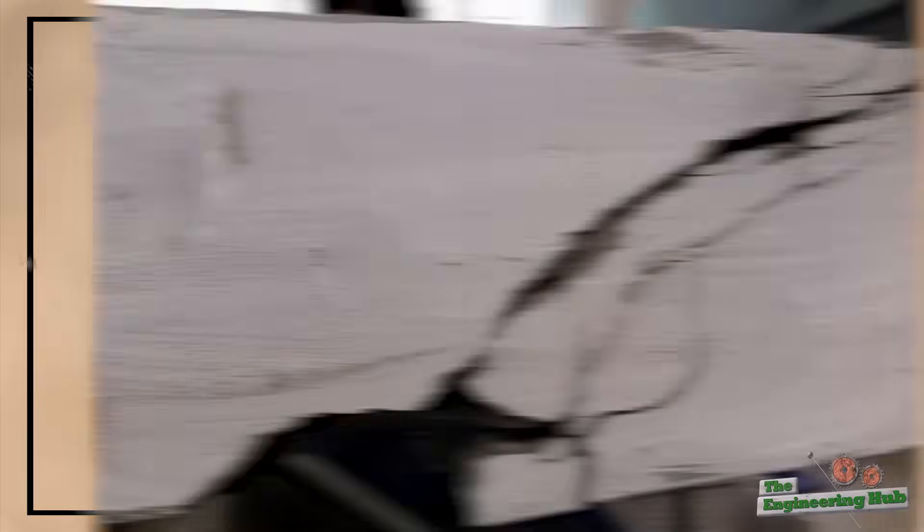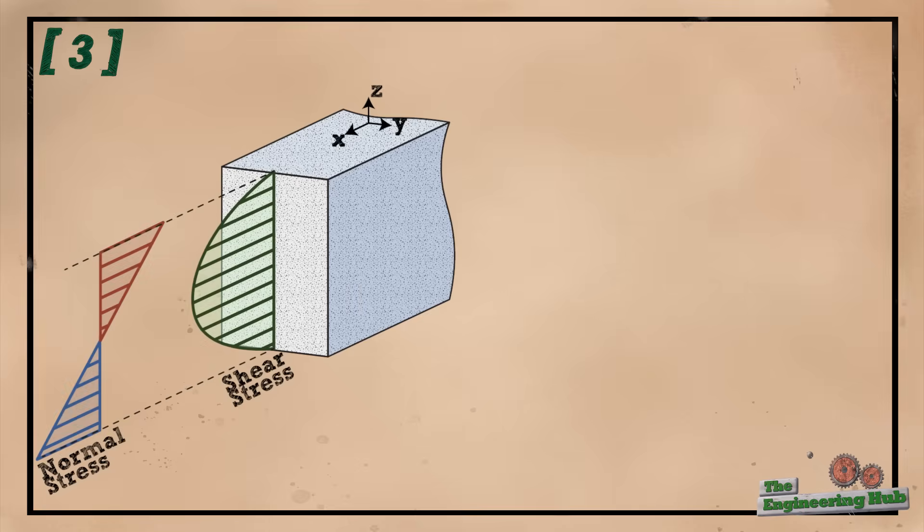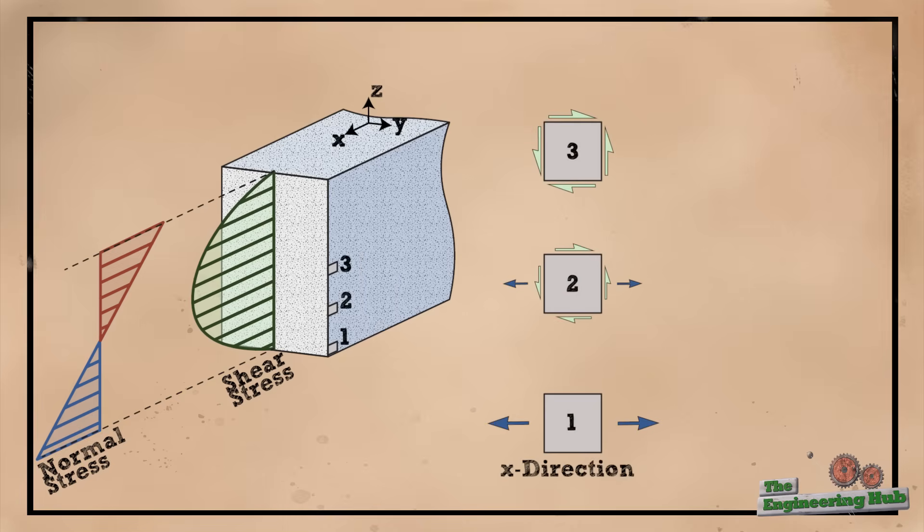When a beam is bent, its cross-section is subjected to normal and shear stresses. The distribution of each varies along the cross-section as shown here. To be able to predict the propagation of the crack, we need to be able to determine in which direction the beam is experiencing the highest tension loads, since it is always the tension loads that actually crack the concrete. The direction in which the highest tension loads act is called the principal direction.